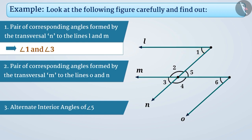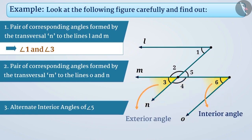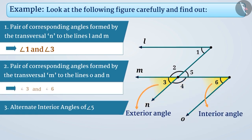The angles formed by the transversal M to the lines O and N are angle 2, angle 3, angle 4, angle 5, and angle 6. Out of these, the vertices of angle 3 and angle 6 are different. Both are formed on the same side of the transversal, and one of them is an interior angle and the other one is an exterior angle, so they form a pair of corresponding angles. Apart from these, there is no other pair of corresponding angles here.